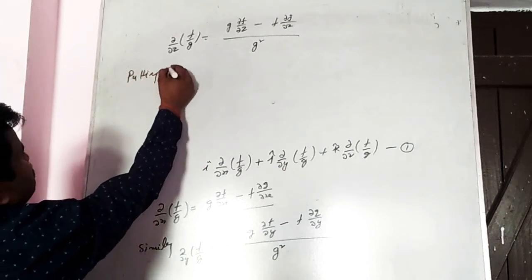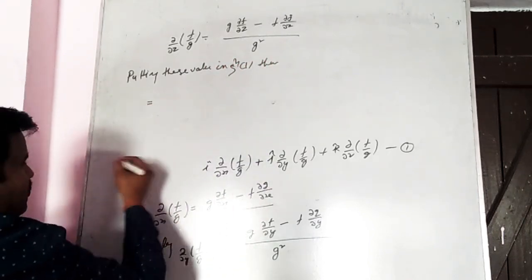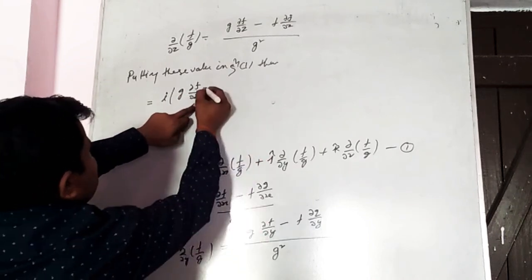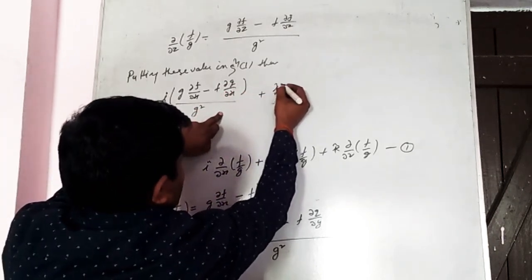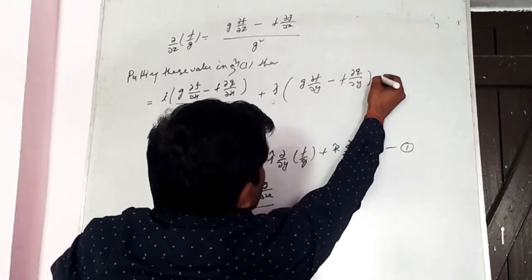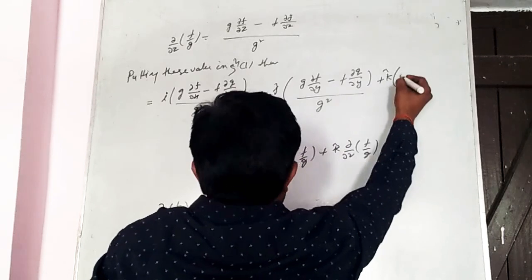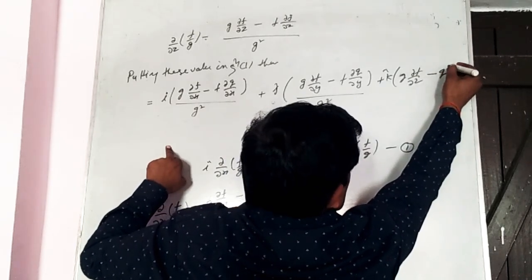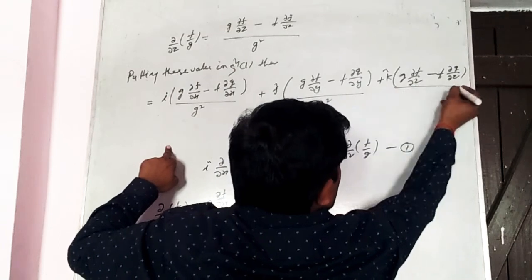Putting these values in equation one, we get: i[g ∂f/∂x − f ∂g/∂x]/g² + j[g ∂f/∂y − f ∂g/∂y]/g² + k[g ∂f/∂z − f ∂g/∂z]/g².